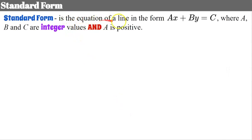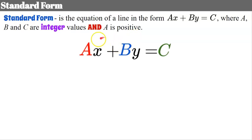Standard form is the equation of a line in the form ax plus by equals c, where a, b, and c are integer values and a is positive. Note that this b is uppercase and not the same as the lowercase b we use to identify the y-intercept in slope-intercept form. Integers by definition are whole numbers and their opposites — counting numbers 0, 1, 2, 3, 4, and so on, or negative 1, 2, 3, all the negative values. A is our leading value and it's always positive.